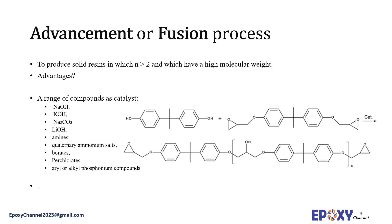In the advancement process, diglycidyl ether of bisphenol A and bisphenol A react at 150 to 190°C in the presence of a catalyst. The advancement process differs from the Taffy process in that it only yields resins with an even number of monomers, for example n = 0 to 4. The advancement method can be divided into bulk polymerization and catalytic polymerization. After low molecular weight liquid E-type epoxy resins and bisphenol A are heated and dissolved, the addition reaction expands the chain, forming a high molecular weight solid epoxy resin. Domestic E10, E06, E03 and other epoxy resins are produced this way.